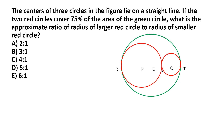It is given in the problem that the centers P, C, and Q lie on a straight line. Since the circles are touching each other, their touch points will be on the same straight line as the centers. For example, the larger red circle and the green circle touch at point R, so their centers P and C lie on the same straight line through R. Similarly, since the smaller red circle touches the green circle at point T, drawing a line joining centers C and Q means C, Q, and T all lie on a straight line.